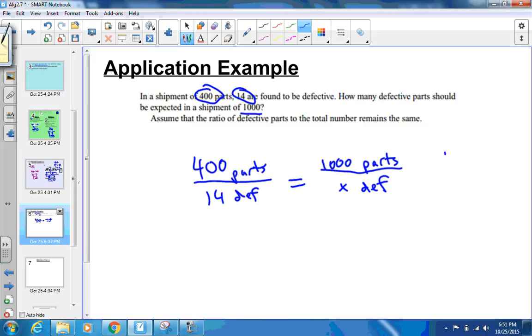Now I'm going to set that equal to, since we still have the second one, we're going to get 1,000 parts over x defective. We want to solve for x. We're assuming the ratio would be constant or consistent, the same. Setting up the proportion might be the hardest part. The top has the parts. The bottom has the defective ones. You've got to keep it consistent in both ratios.